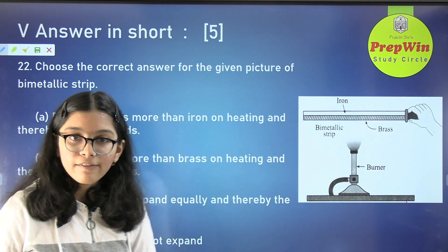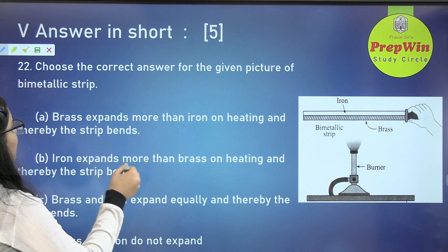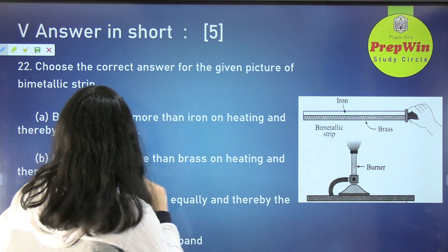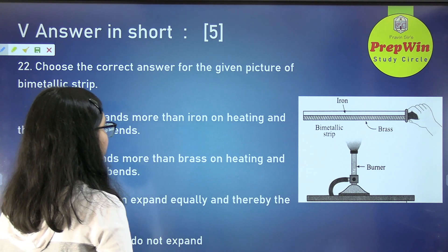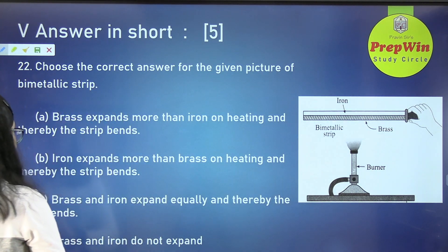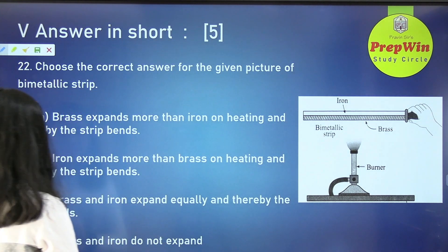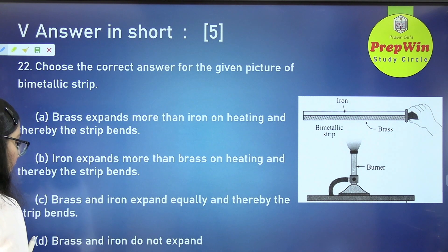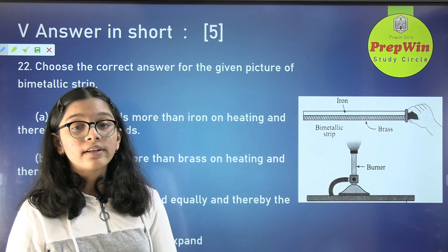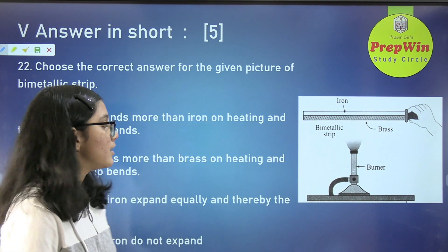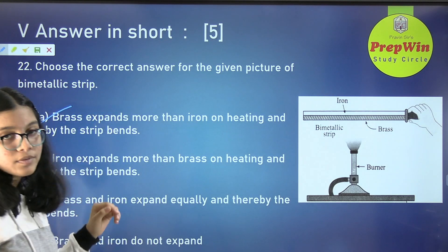We have another diagram and we have to choose the correct answer. The options are: brass expands more than iron on heating and thereby the strip bends; iron expands more than brass; they expand equally; or they do not expand. The answer is: brass expands more than iron on heating, and thereby the strip bends.